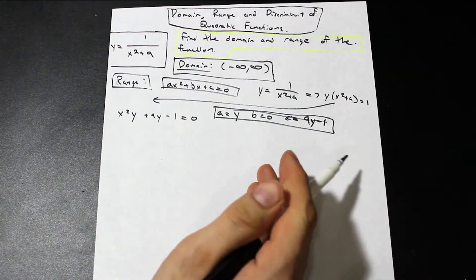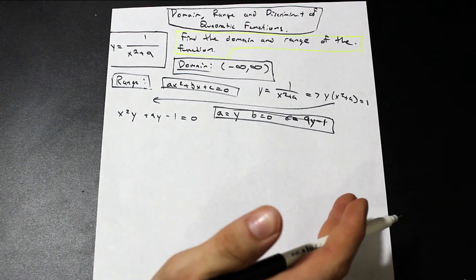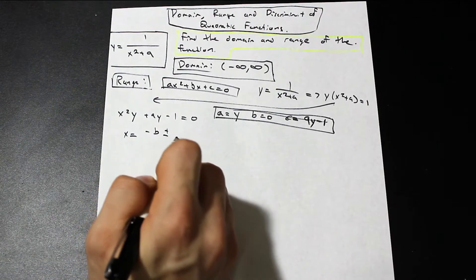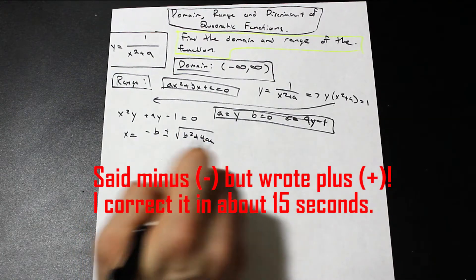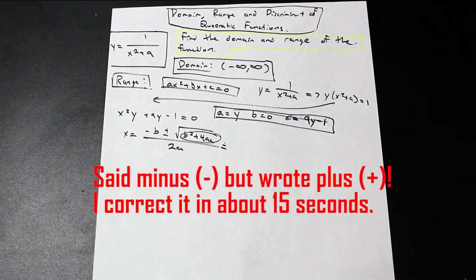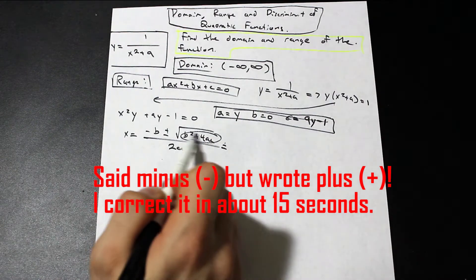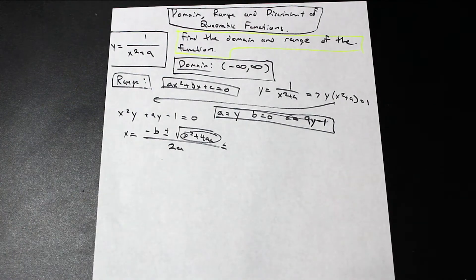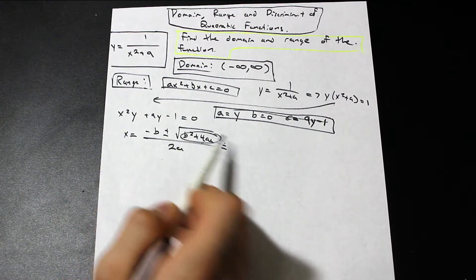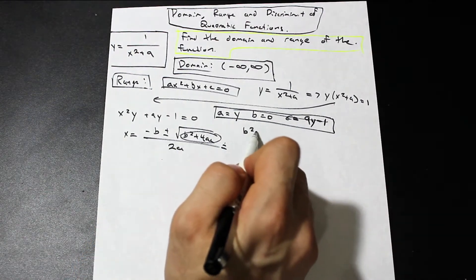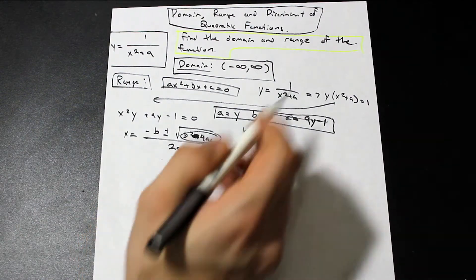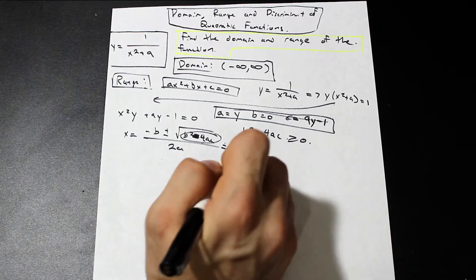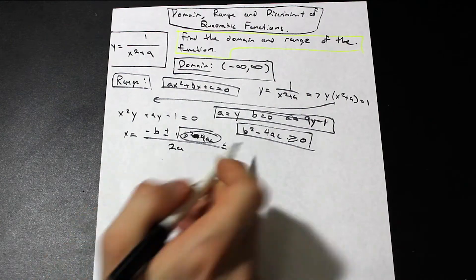Knowing our coefficients, we can plug into the discriminant. The discriminant is b squared minus 4ac — this term must be greater than or equal to zero because it lives under a square root in the quadratic formula. So b squared minus 4ac must be greater than or equal to zero. Plugging our values in: a is y, b squared is zero, and c is nine y minus one. So we have zero minus 4·y·(9y minus 1) — that must be greater than or equal to zero.